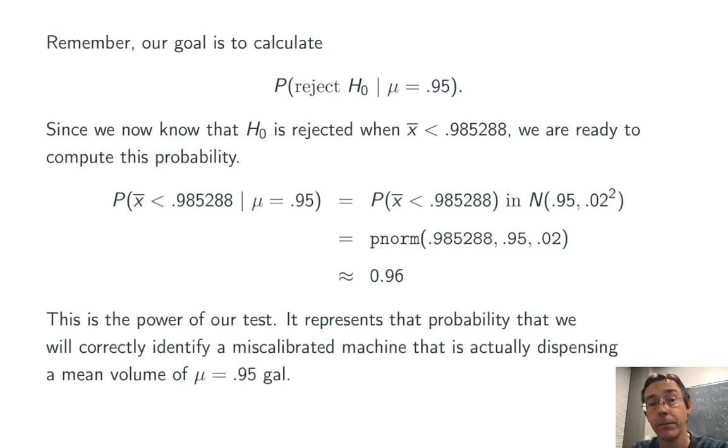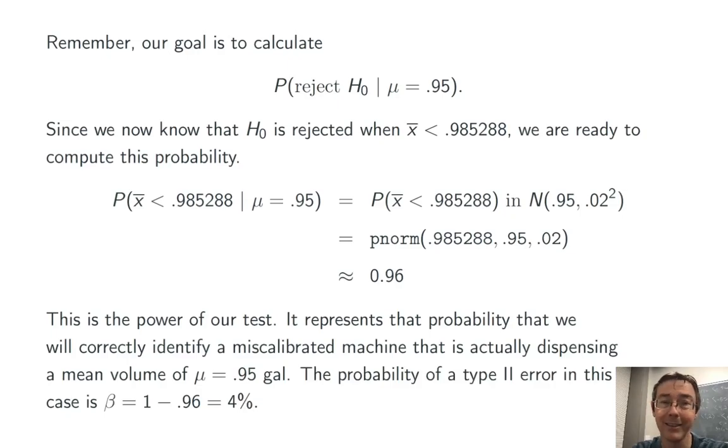This is the power of the test. It represents that probability that we're correctly identifying a miscalibrated machine that's actually dispensing a mean of 0.95 gallons per vend. The probability of a type 2 error is 1 minus this. So about 4%. So we're happy here because that's a small number. That we're only having type 2 error under the circumstance that the machine's giving out 0.95 gallons on average 4% of the time. Nice small number.